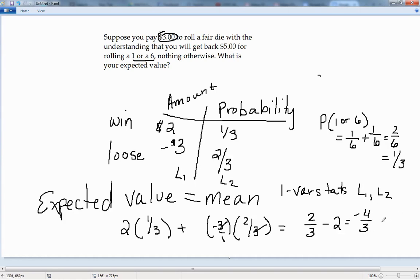So here, now as a decimal, since we're talking about money, this is easier. And 4 thirds would be negative 1.3 repeating. So we could say, if we round to the nearest cent, we would expect to lose $1.33.